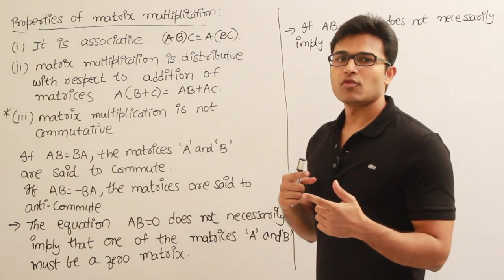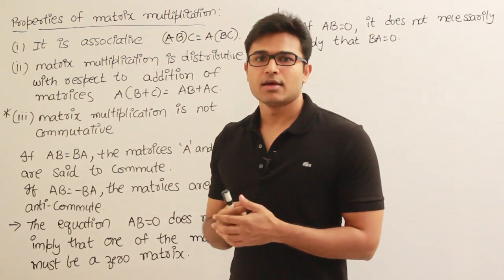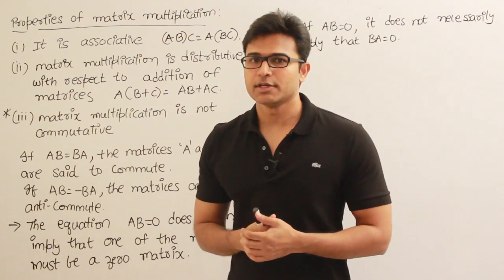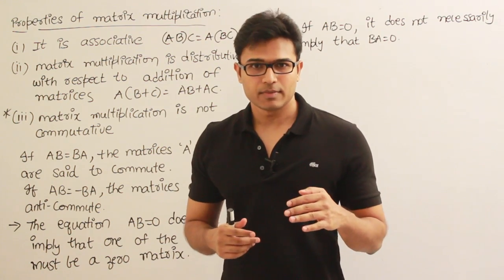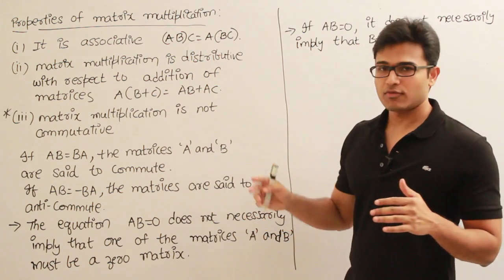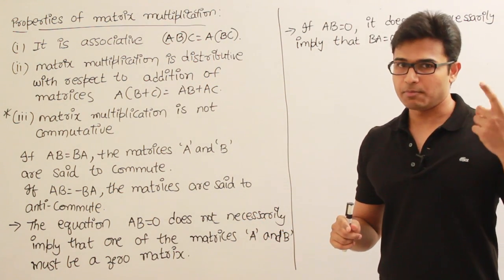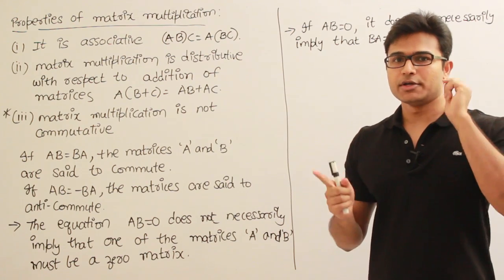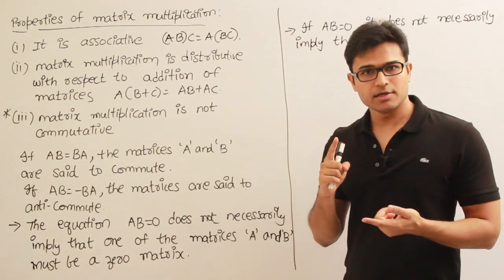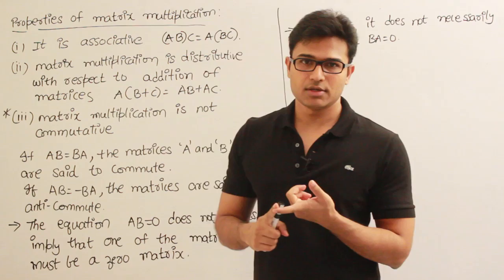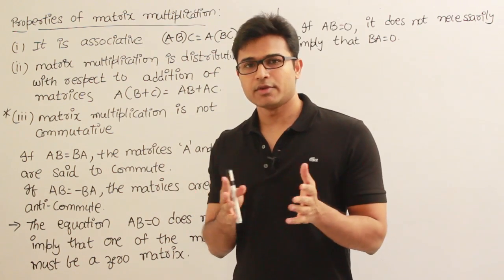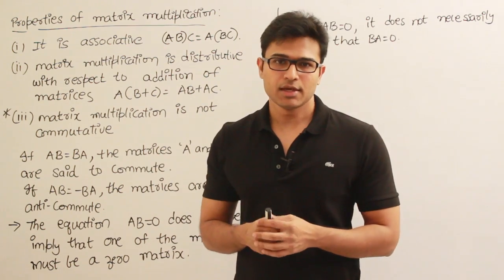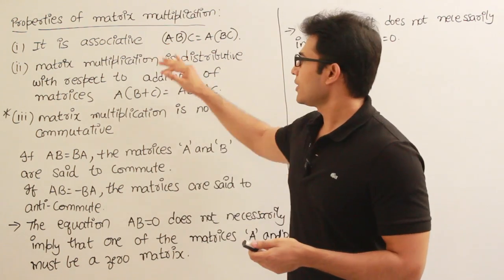Whatever way you perform the matrix multiplication, the final result is going to be the same. One more thing: before applying any of these properties, the matrices must first be conformable for multiplication — meaning they are eligible for multiplication — and then they are associative.